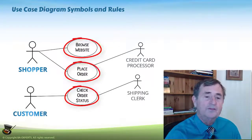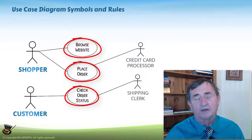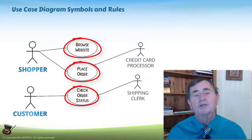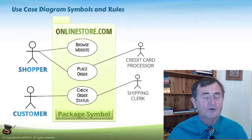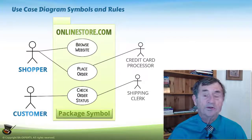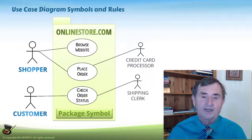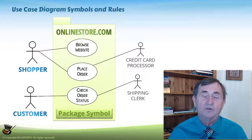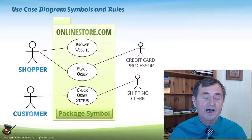If all three of these Use Cases are part of a common application, you might put them together in what UML calls a package. The symbol for a package is something that looks like a folder with a tab on top. This indicates that these things are part of the same package — they are within its scope and are clearly delineated and defined.